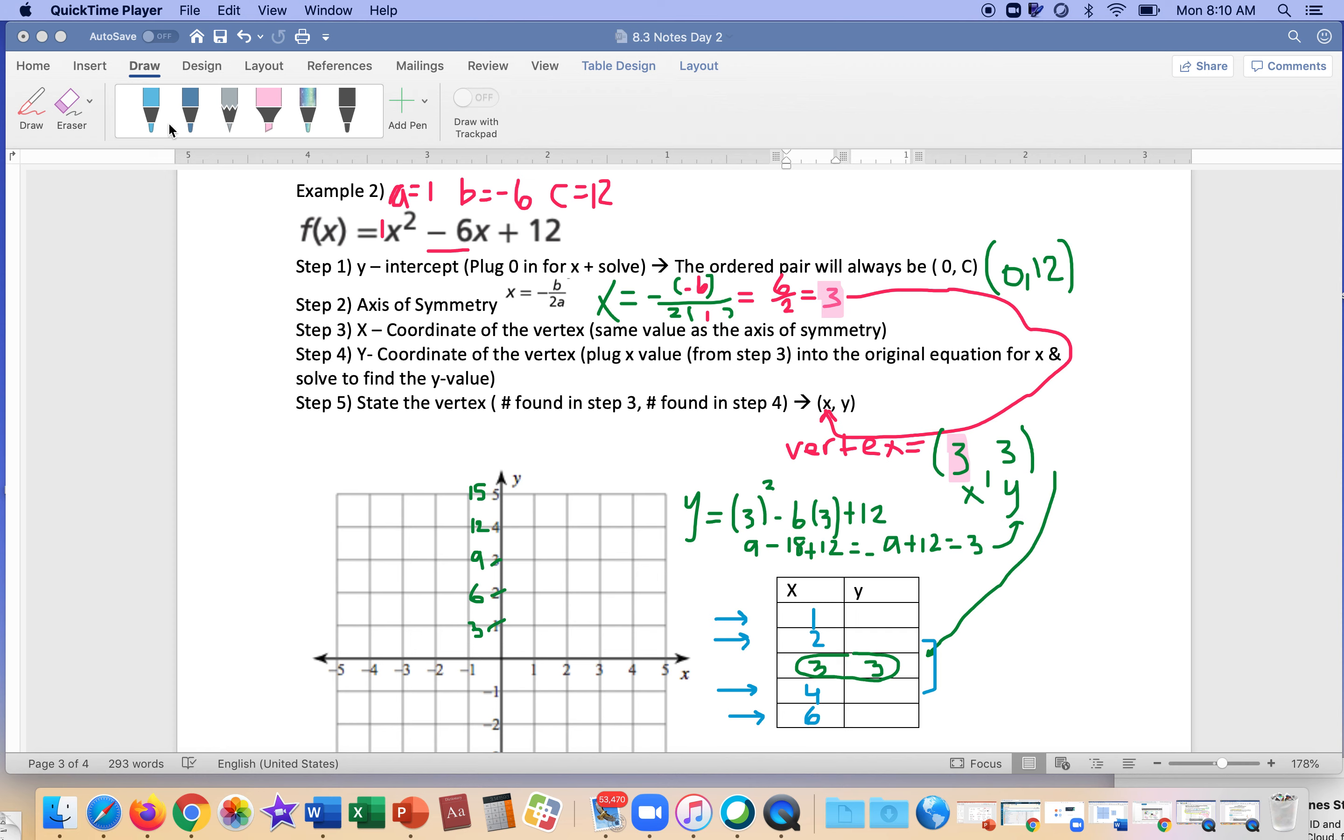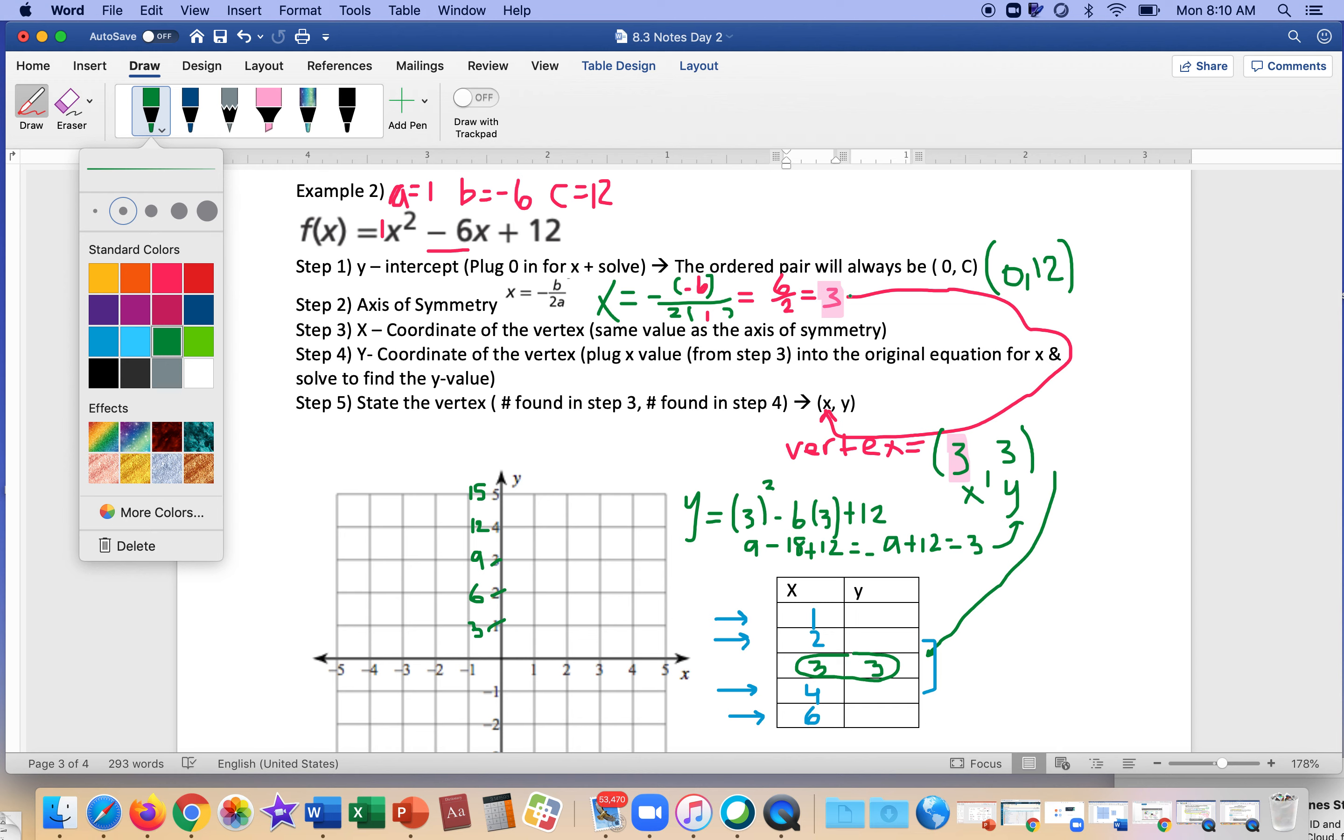So the axis of symmetry is going to be x equals positive 3. That would be the vertical line that slices through our graph. Notice, the axis of symmetry, that x value of 3, is the same as the x-coordinate of the vertex because it slices through that ordered pair, specifically at x3, because it's a vertical line. Another thing that people do is sometimes if you don't do parentheses up here for b, they might put a positive 6 because they would see that negative symbol and get confused. And I always throw the original negative up on top with the b so that I don't get confused.